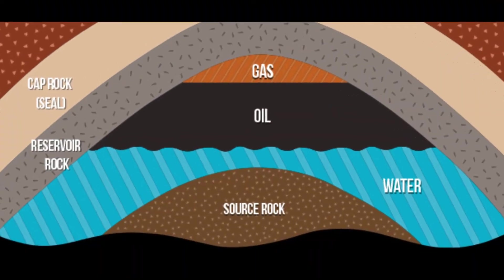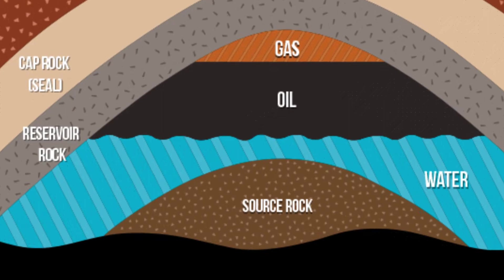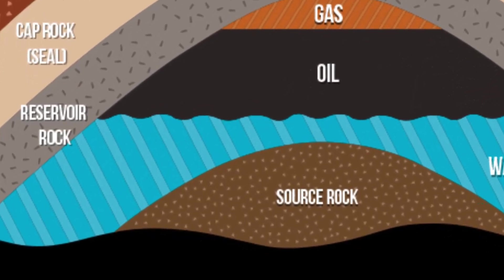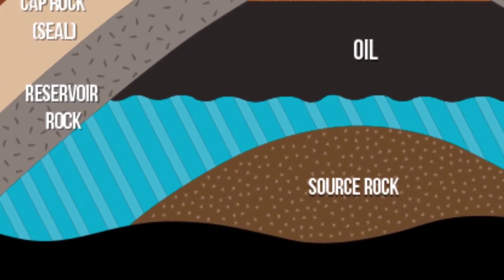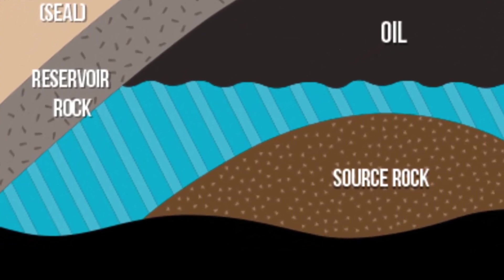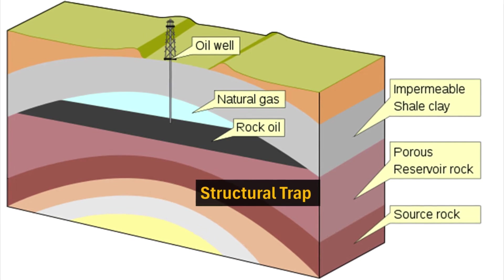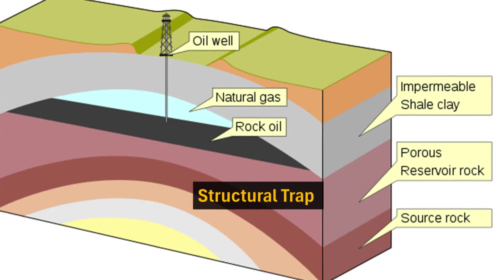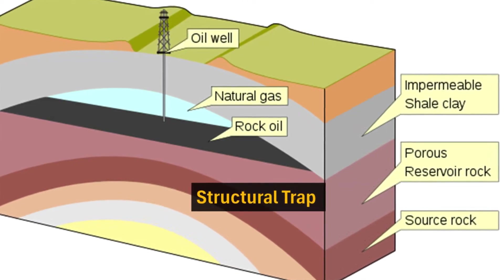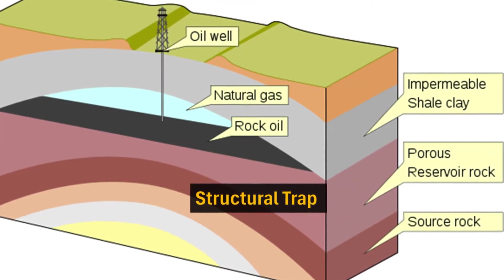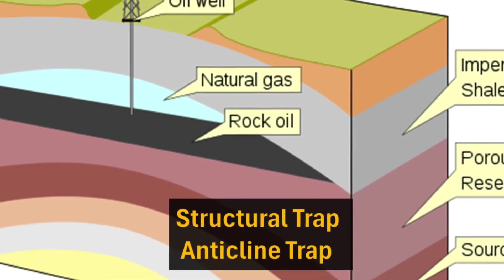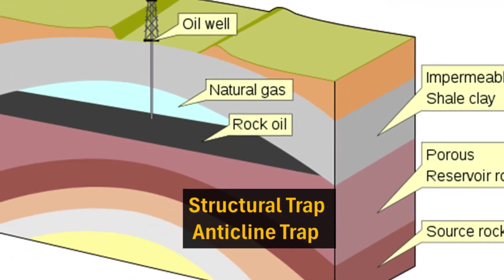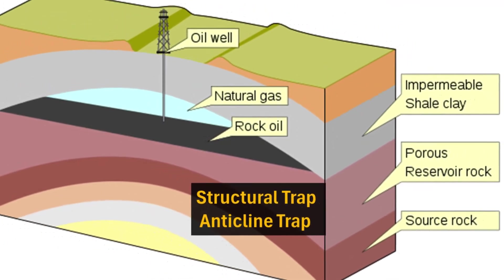Not all reservoirs are created equal — there are different types of traps that can form a reservoir depending on the shape and structure of the rock layers. One type is called a structural trap, which occurs when rock layers are deformed or displaced by tectonic forces such as folding or faulting. For example, an anticline trap is an upward fold of rock layers where oil and gas migrate into the highest part of the fold, trapped by an overlying impermeable layer.